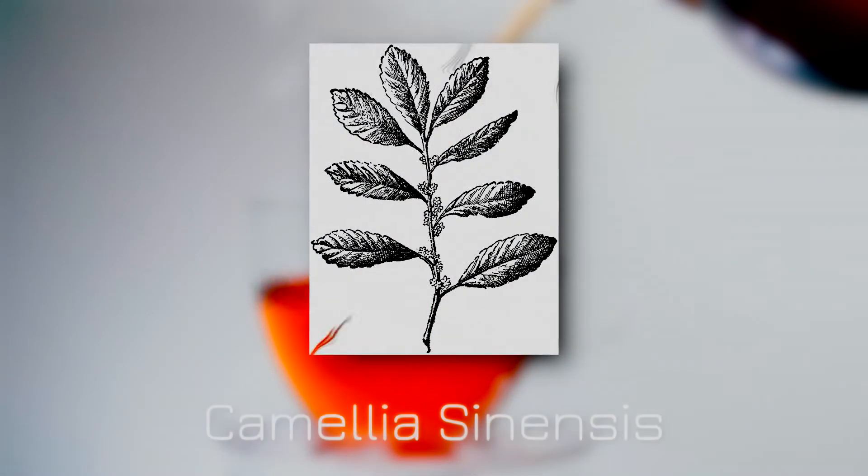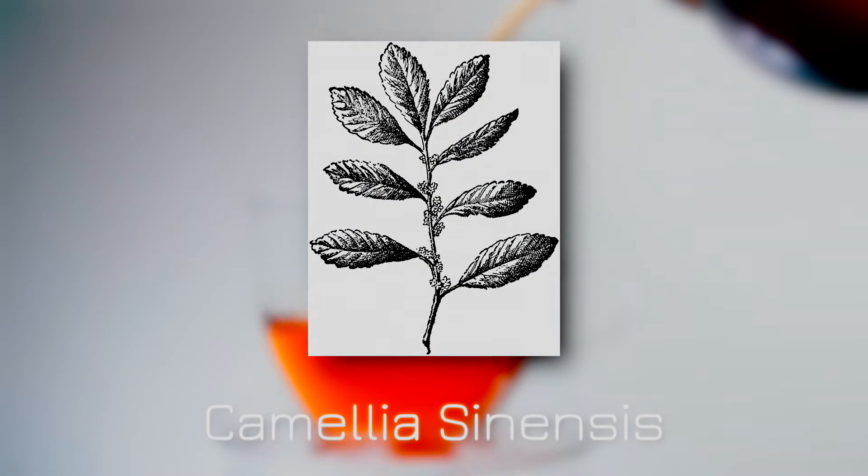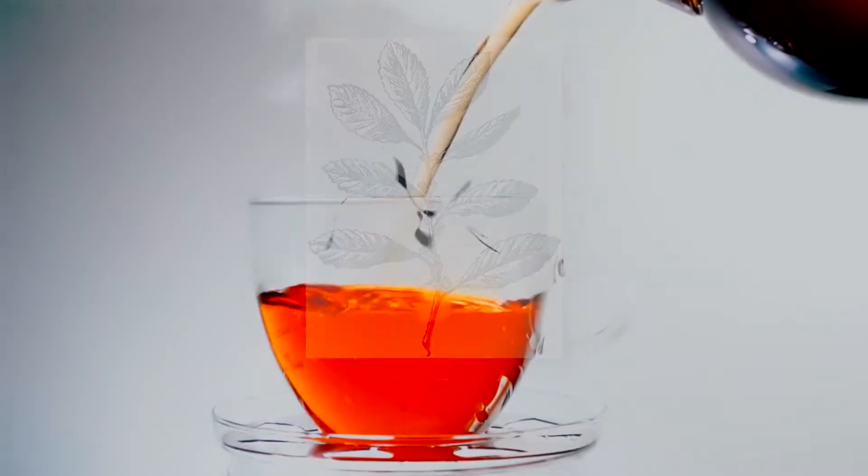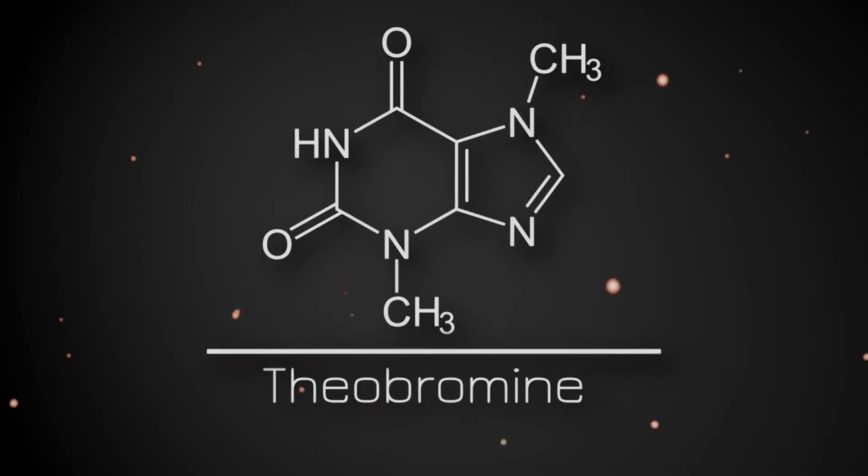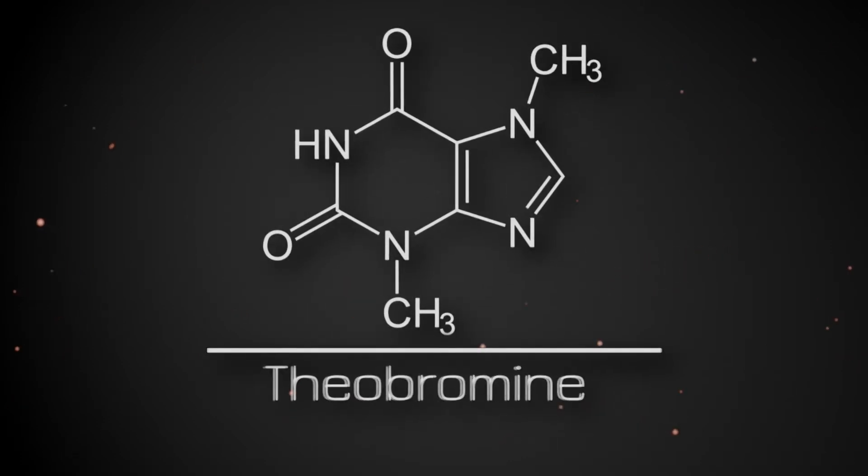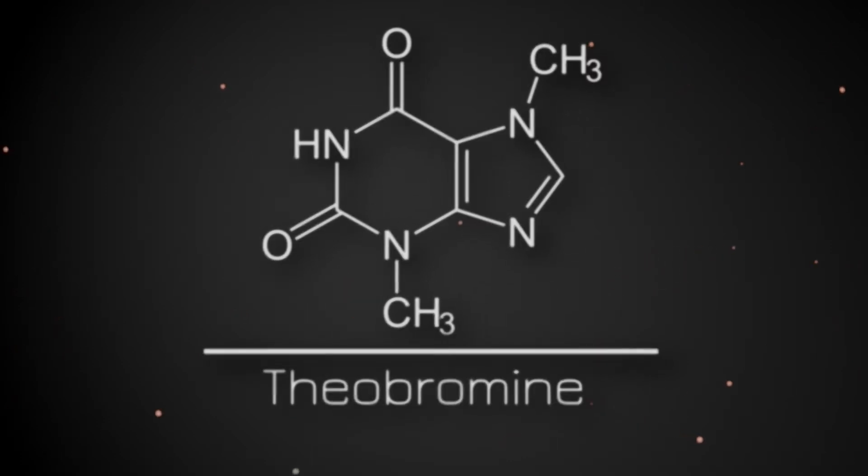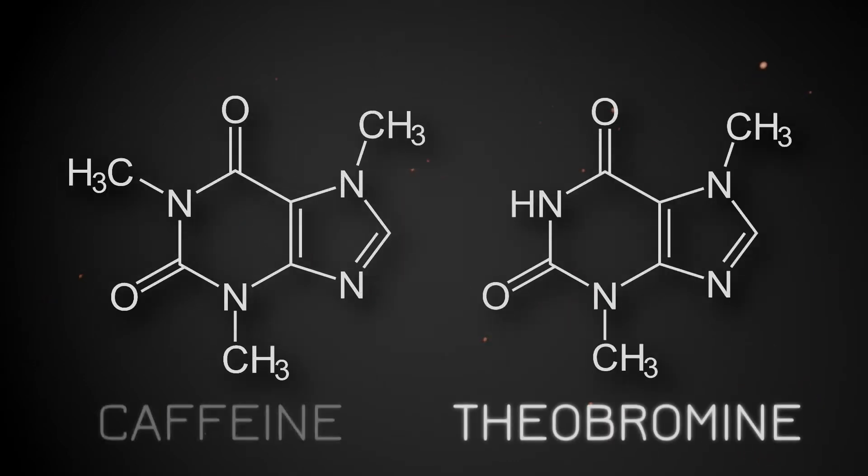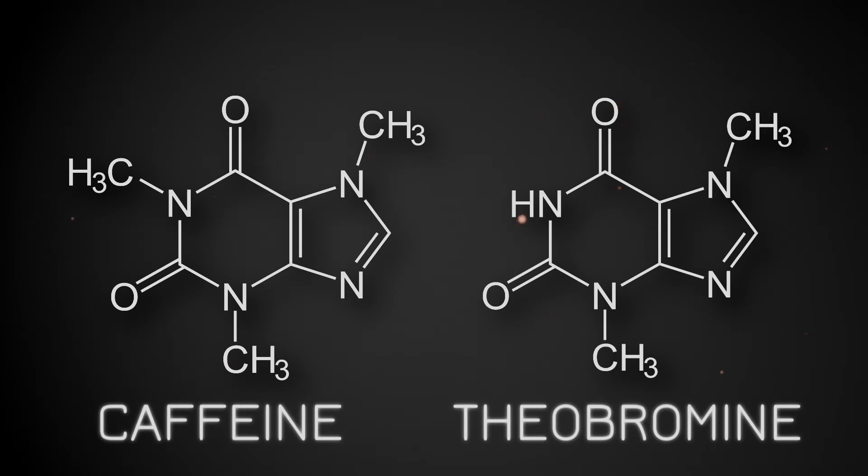Tea may seem worlds apart from coffee in both taste and appearance, but at its molecular core, they are almost the same. While containing similar levels of caffeine, tea also contains a compound known as theobromine. Despite the asinine naming conventions of this molecule, it actually contains zero atoms of bromine, and instead forms a structure that looks nearly identical to caffeine.